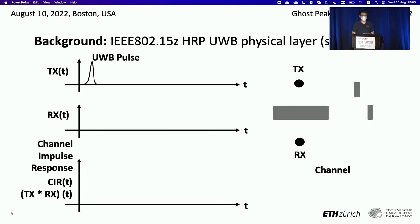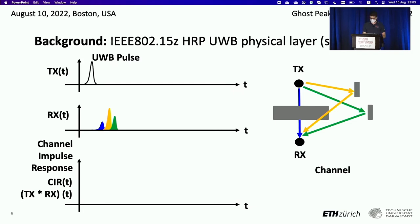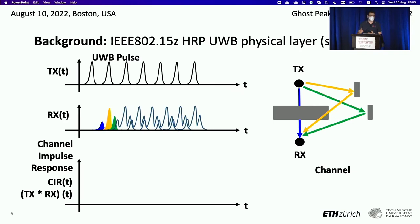What happens at the physical layer? It's a bit more complex, but let's go step by step. We have a UWB pulse that travels through a channel between the transmitter and the receiver. There is the shortest path — the blue one — which represents the distance between them and is the one we're interested in. But there are also other copies arriving from other paths like reflections off objects. And we don't have one pulse but multiple pulses at high frequency. All these copies arrive at the receiver overlapping each other. This is called interpulse interference.